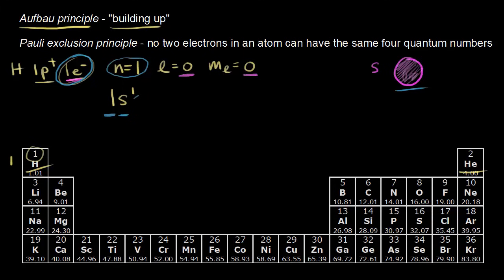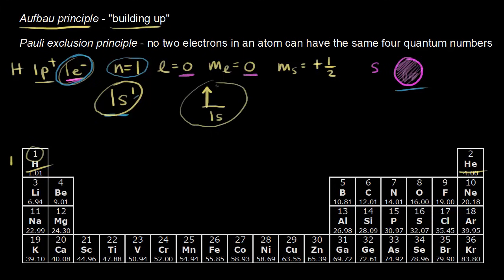There's another way to write an electron configuration called orbital notation. You draw a line representing an orbital — here, an s orbital in the first energy level, labeled as the 1s orbital. We put the one electron of hydrogen into that 1s orbital with spin up. This arrow pointing up represents one electron with an up spin, so the fourth quantum number ms equals positive one half.